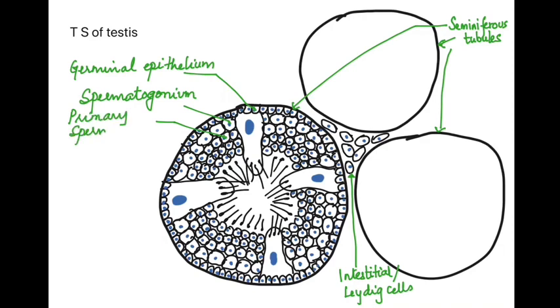This primary spermatocyte now undergoes meiosis. After the first meiotic division, the chromosome number is halved and there are two haploid cells formed which are the secondary spermatocytes.